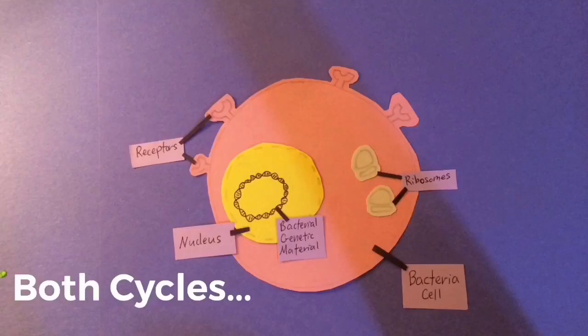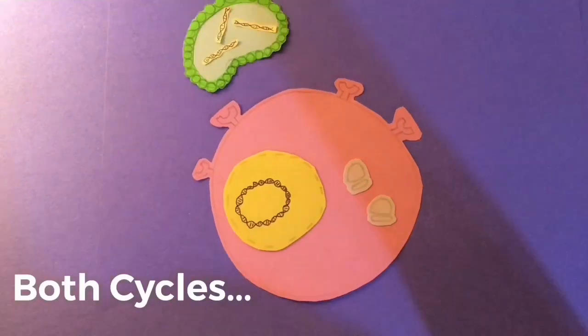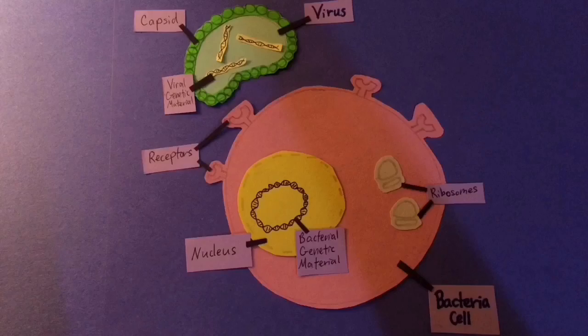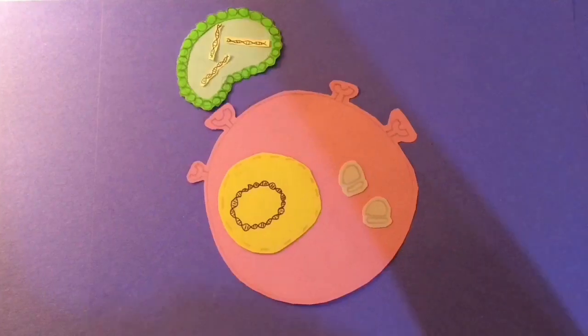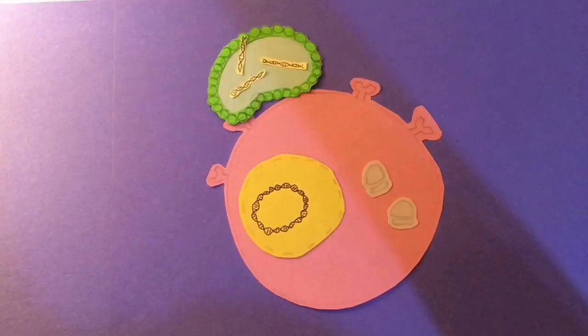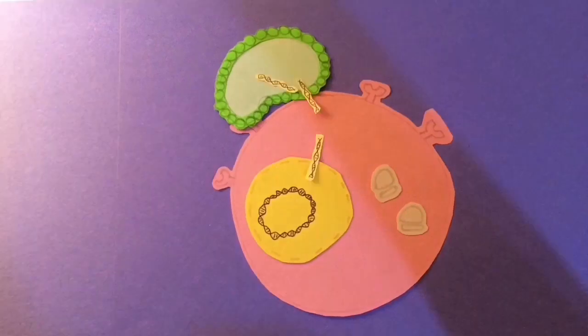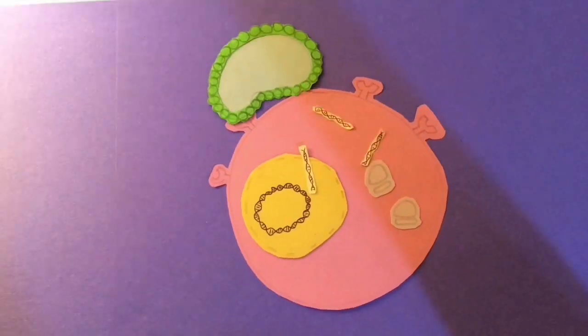Both cycles begin when the virus attaches to a cell's receptor. Viruses are super picky about their host because of this. The virus then injects its genetic information inside, or if it has a membrane, tricks the host into eating it or fuses with the host.